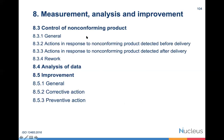Control of non-conforming product covers how we take action when non-conformance is detected before delivery within our premises, how we deal with the product after delivery, how we deal with the non-conforming product overall, and how we handle rework. There are specific requirements in ISO 13485 under clause 8.3 for these situations.